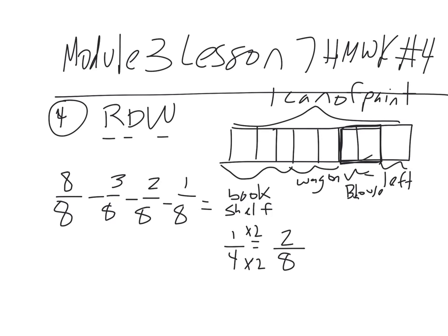So if you do eight-eighths minus three-eighths, you get five-eighths. If you do five-eighths minus two-eighths, you get three-eighths. And if you do three-eighths minus one-eighth, you're left with two-eighths. Or, if you simplify that, one-fourth is for the birdhouse. This little section right here represents two-eighths or one-fourth.